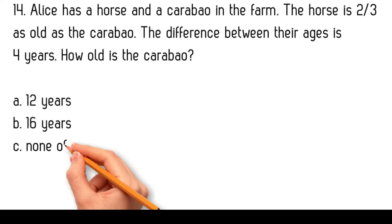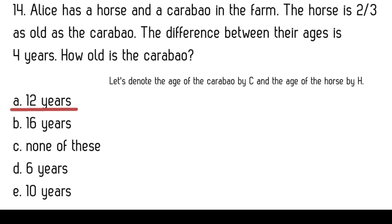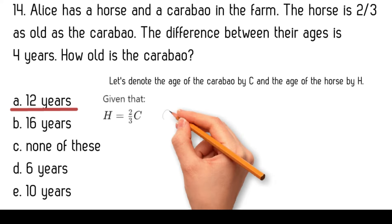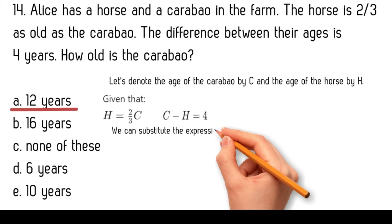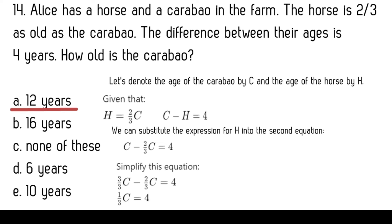Alice has a horse and a carabao in the farm. The horse is two-thirds as old as the carabao. The difference between their ages is four years. How old is the carabao? Options: twelve years, sixteen years, none of these, six years, ten years. Let C be the age of the carabao and H the age of the horse. Given H equals two-thirds C and C minus H equals four, substituting gives C minus two-thirds C equals four, so one-third C equals four. Therefore C equals twelve. The carabao is twelve years old.